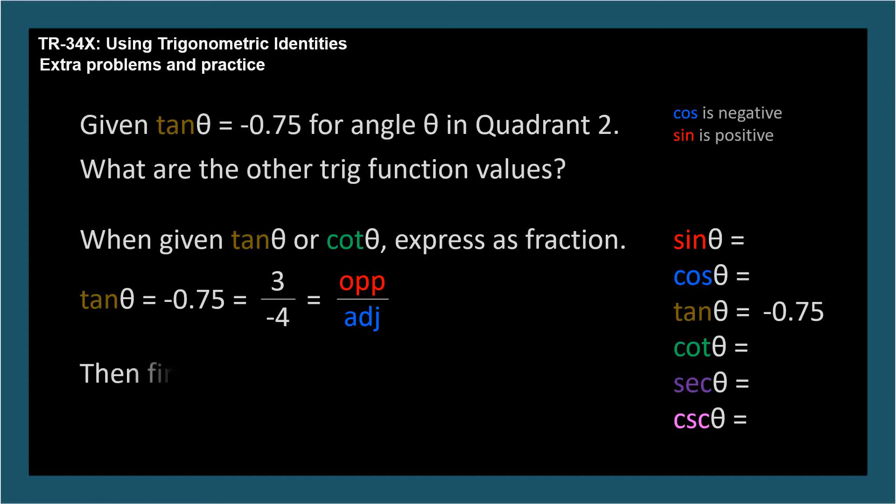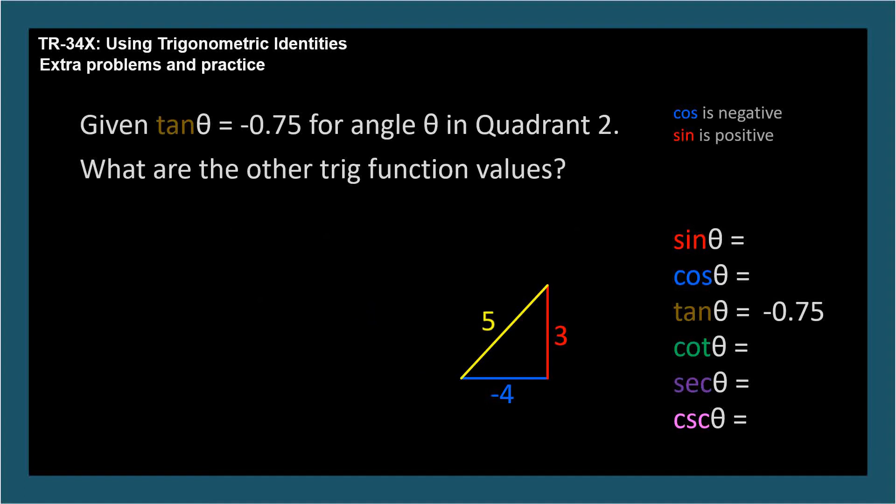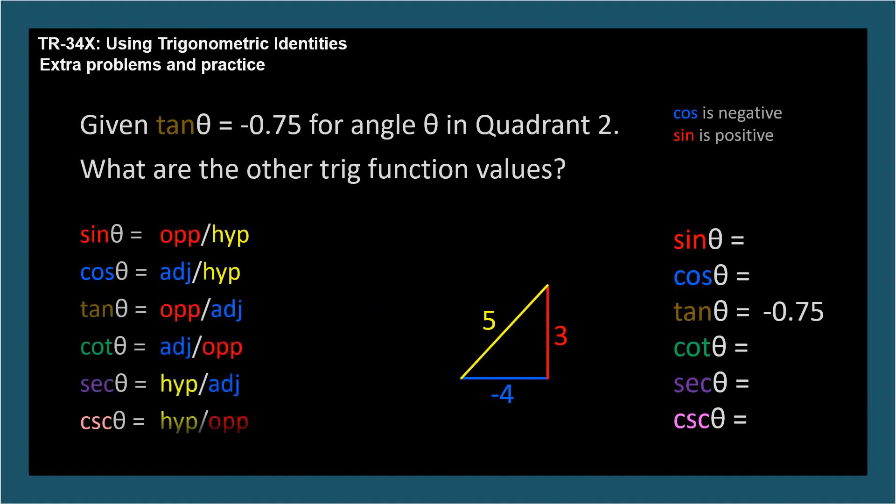Now we need to find the hypotenuse. We draw a triangle, it doesn't have to be to scale, with the opposite and adjacent sides labeled corresponding to the appropriate numerator and denominator of the tangent or cotangent provided. In this case, we should recognize a 3, 4, 5 right triangle, so the hypotenuse is 5. Since we know opposite, adjacent, and hypotenuse, sohotoa is our key to determining all of the trig function values.